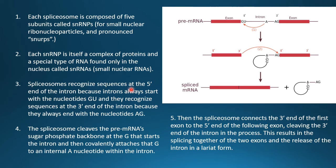The spliceosome recognizes the sequence at the 5' end of the intron, which always starts with the nucleotide GU, and the sequence at the 3' end, where it ends with the nucleotide AG. The spliceosome cleaves the pre-mRNA sugar-phosphate backbone at the G that starts the intron, then covalently attaches that G to an internal A nucleotide within the intron, forming a loop — the lariat structure.